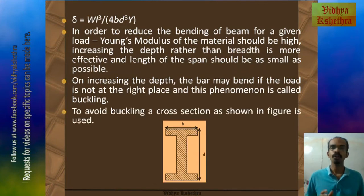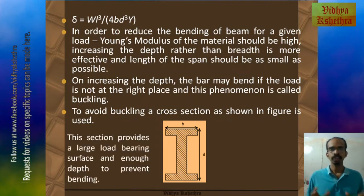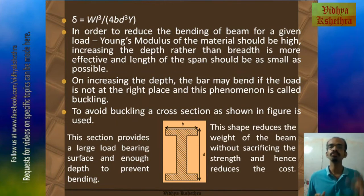So to avoid buckling, a cross-section as shown in the figure is used. This section provides a large load-bearing surface and enough depth to prevent bending. Also, this shape reduces the weight of the beam without sacrificing the strength, and hence reduces the cost.